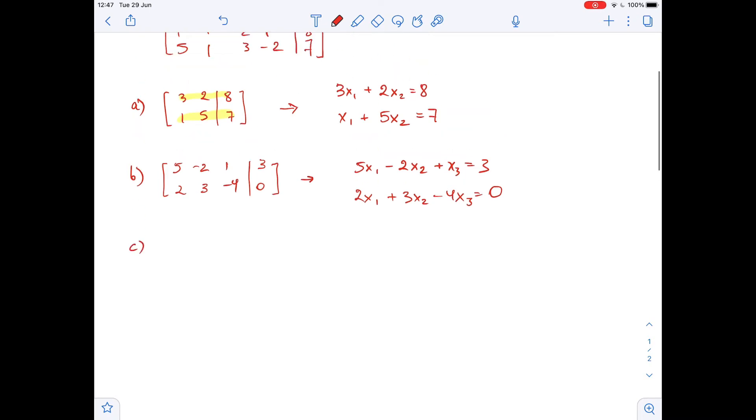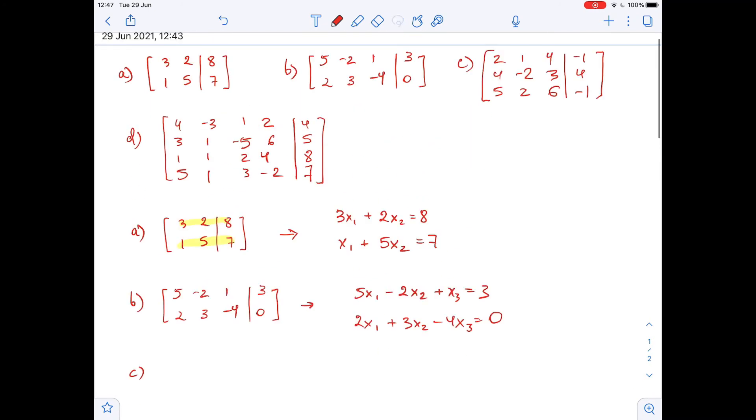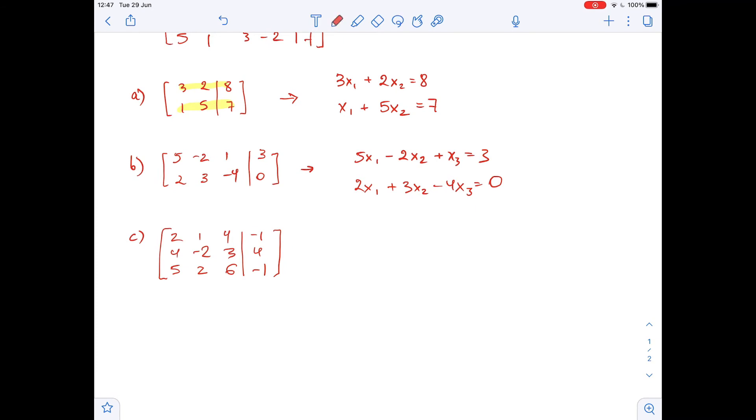Now let's move on to matrix c. So in matrix c there are three rows, so we will have three equations and three columns, so there are three variables. So we get 2x1 plus x2 plus 4x3 equals negative 1, 4x1 minus 2x2 plus 3x3 equals 4, 5x1 plus 2x2 plus 6x3 equals negative 1.